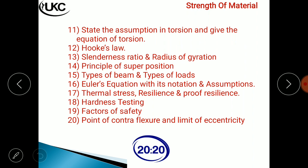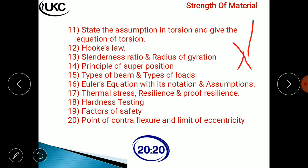Slenderness ratio and radius of gyration are from chapter six. Slenderness ratio is denoted by lambda (λ) and radius of gyration is denoted by k. These are two important definitions to know.